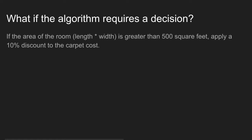Now, what happens if our algorithm requires a decision? For example, let's say that if the area of the room was greater than 500 square feet, I wanted to apply a 10% discount to the carpet cost. Now we have a condition, or we have a situation where the program might apply a 10% discount in some cases, and it might not in others. So we have a branching action that occurs.